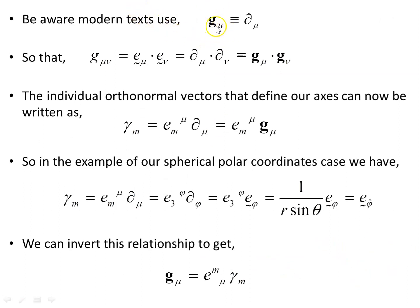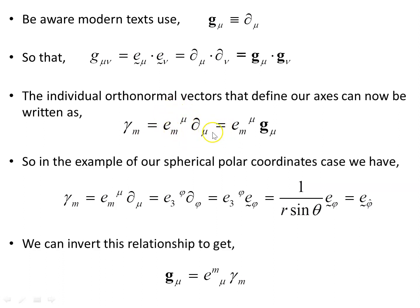Modern texts use bold g_mu equal to the coordinate basis vector, so in the coordinate basis the metric g_mu-nu is e_mu dotted with e_nu — two different representations of the same thing. The individual orthonormal vectors defining our axes can be written as gamma_n equals the coordinate basis vector times a normalization scalar. In the spherical polar example, for the phi direction: e3_phi d_phi gives the unit vector e_phi-hat.